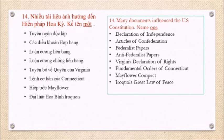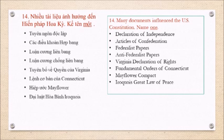Question 14: Many documents influenced the U.S. Constitution. Name one. Declaration of Independence, Articles of Confederation, Federalist Papers, Anti-Federalist Papers, Virginia Declaration of Rights, Fundamental Orders of Connecticut, Mayflower Compact, Iroquois Great Law of Peace.